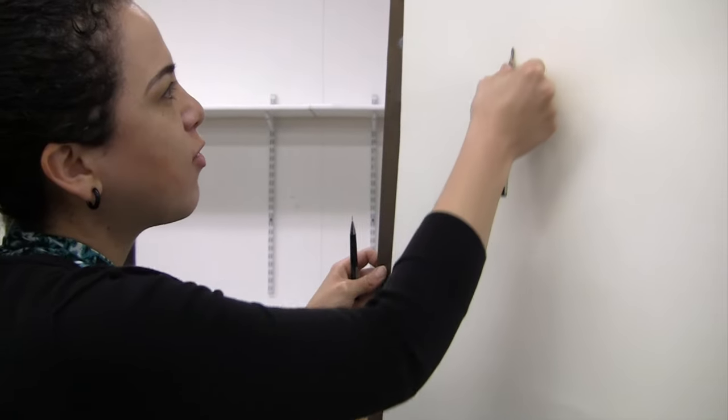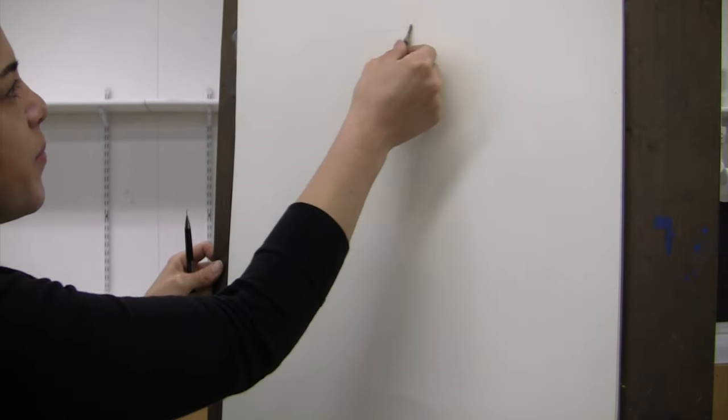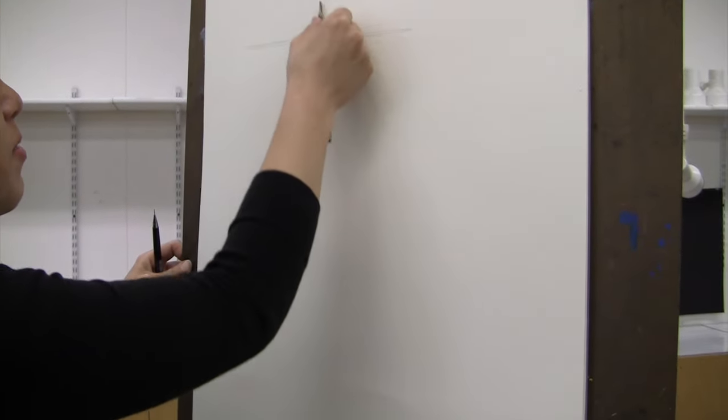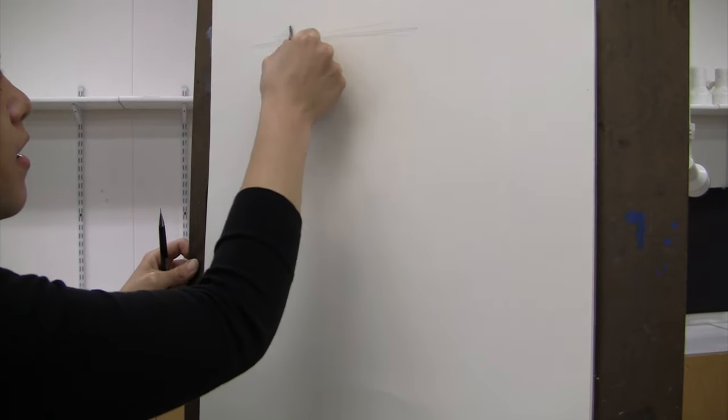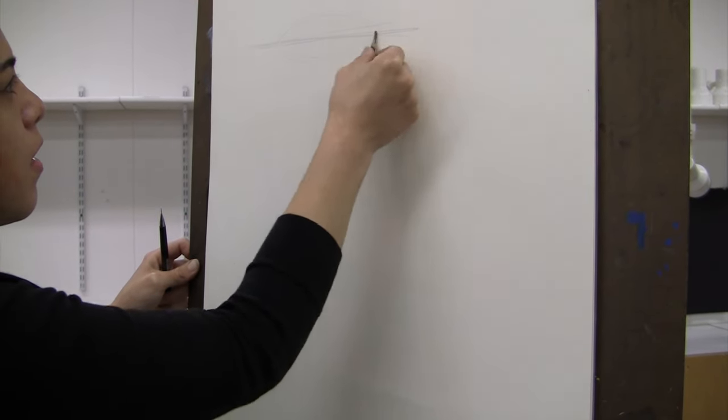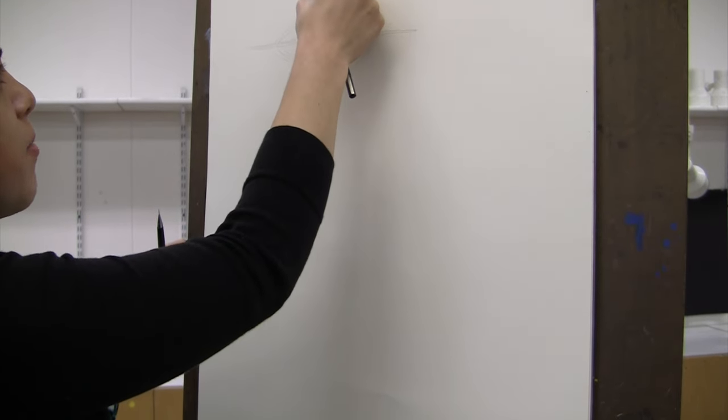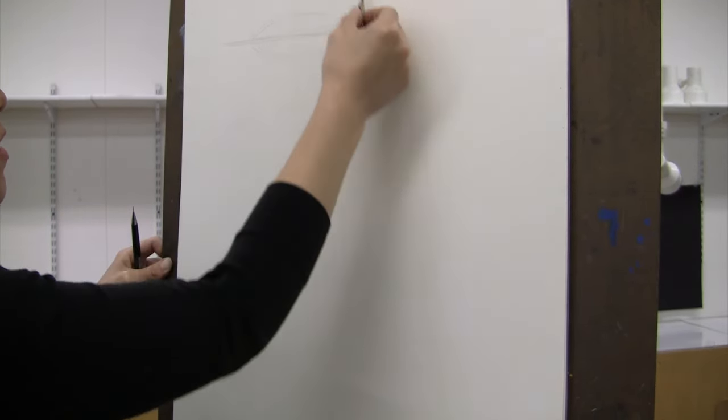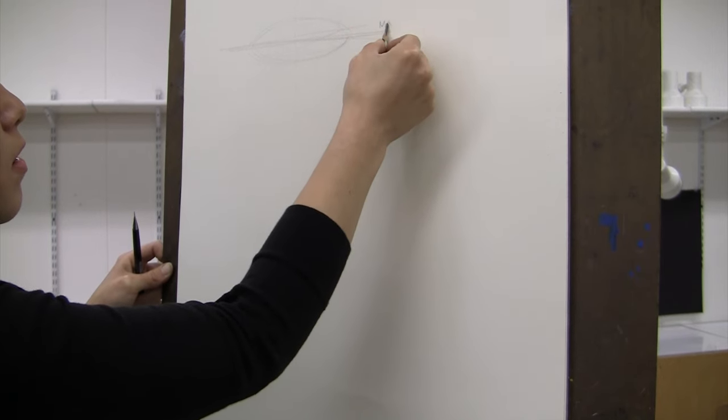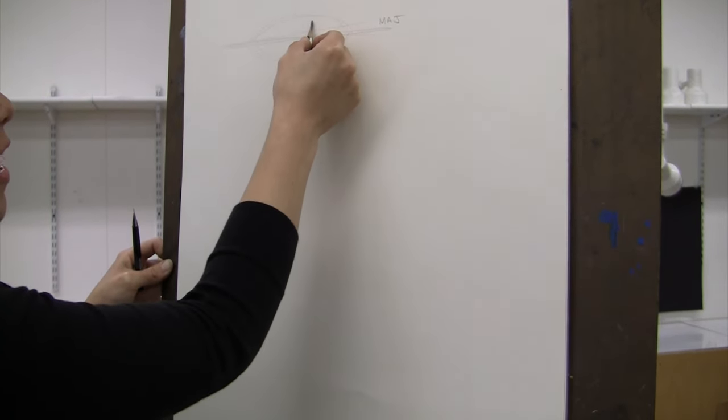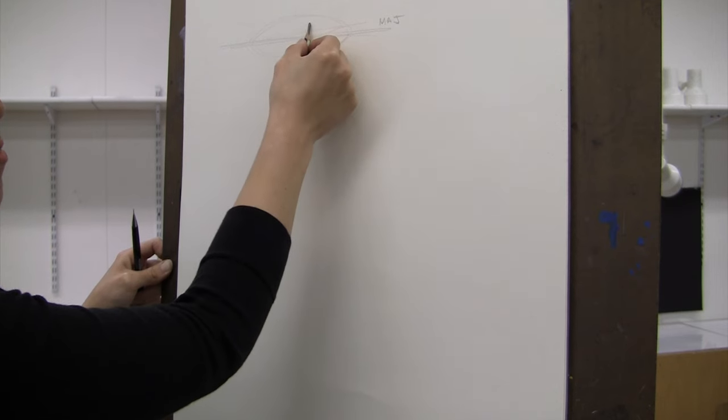So you'll want to refer to your class notes, but just as a reminder, an ellipse, we can think about it having two axis bars. This is going to be our minor and our major.